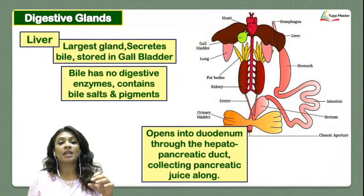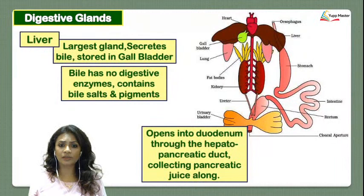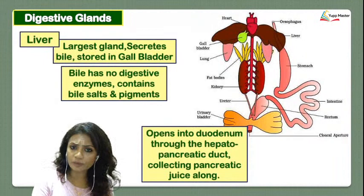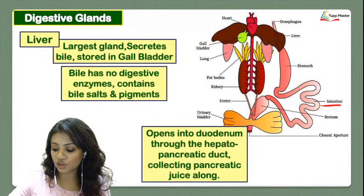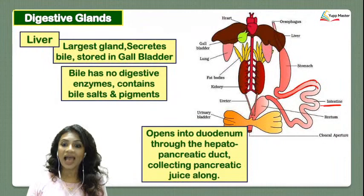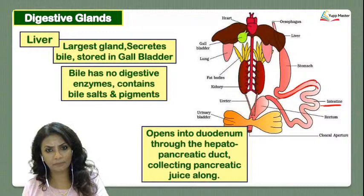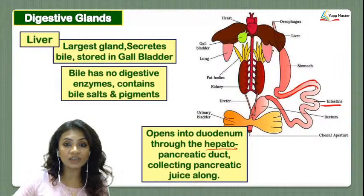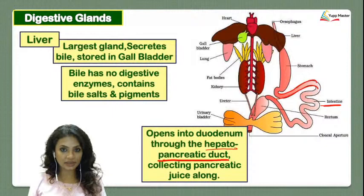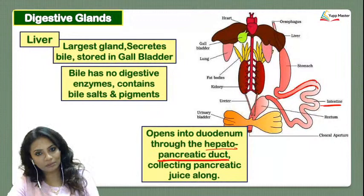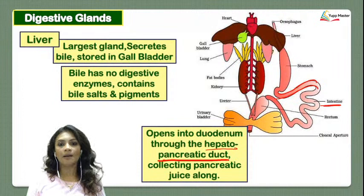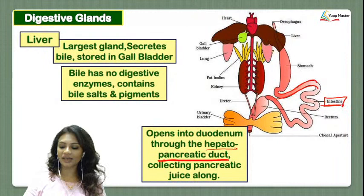The bile duct opens into the duodenum, which is the first part of the small intestine — just as in humans. The ducts carry bile from the gallbladder to the duodenum. Along with bile, pancreatic juice from the pancreas is also collected and put into the duodenum to help in the digestion of various food products.